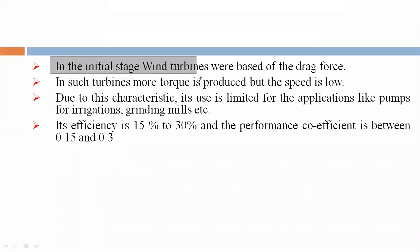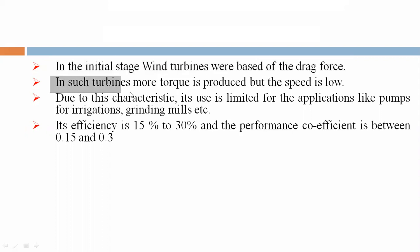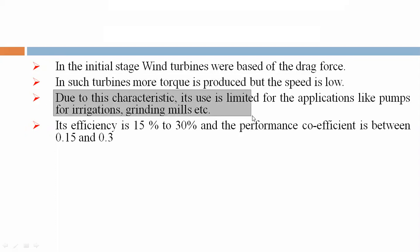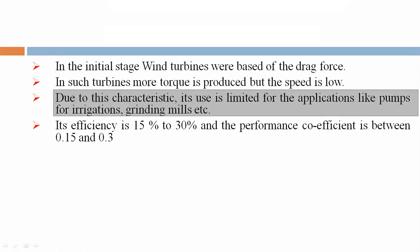In the initial stage, wind turbines were based on drag force. In such turbines, more torque is produced but the speed is low. Due to this characteristic, their use is limited to applications like pumps for irrigation, grinding mills, etc.